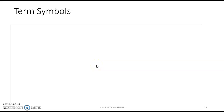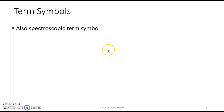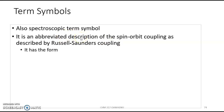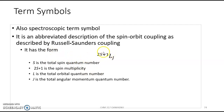The usual way to represent Russell-Saunders coupling is a term symbol, also called a spectroscopic term symbol. It is an abbreviated description of the spin-orbit coupling as described by Russell-Saunders — also known as LS coupling or RS coupling. It has the form of the multiplicity written as a superscript, followed by the letter representation of the resultant orbital angular momentum.